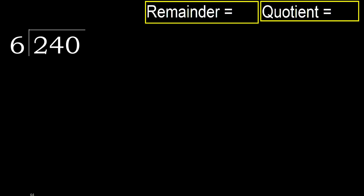240 divided by 6. 2 is less, therefore next. 24 is not less, therefore we work with 24. 6 multiplied by which number is nearest to 24 but not greater? 6 multiplied by 5 is 30.